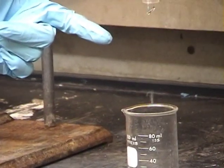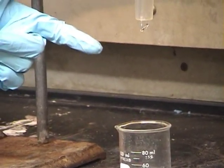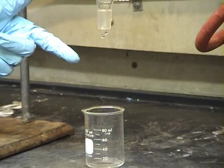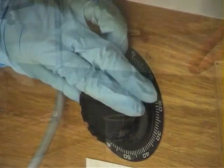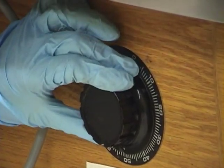The distillate should drop at a rate of one drop per second. If it is dripping faster than that, as shown here, the variac dial should be turned down.